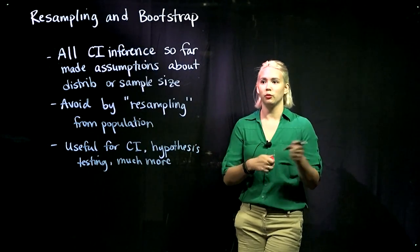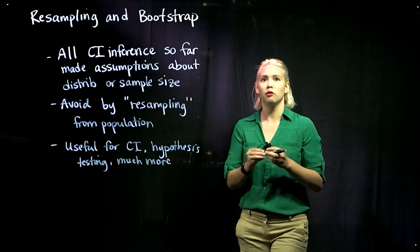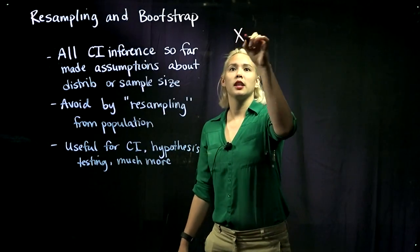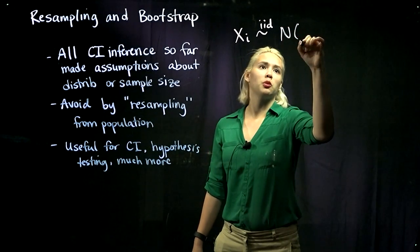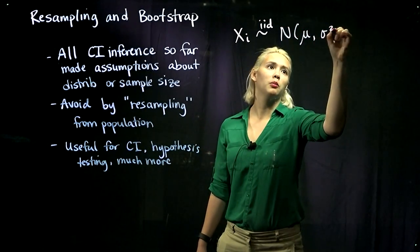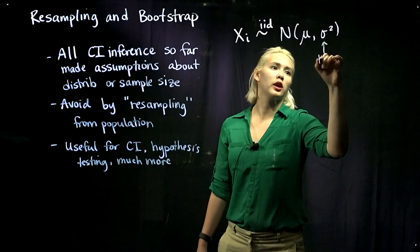For example, when we've been working with the mean, we've been assuming that our samples were from a normal distribution with some unknown mean mu and some known variance sigma squared.